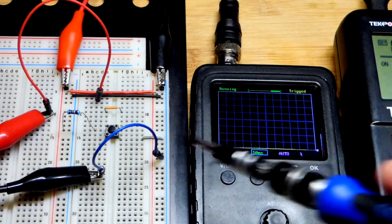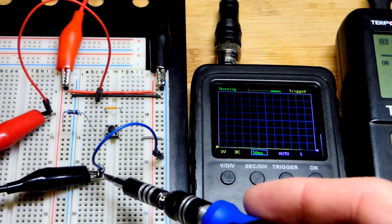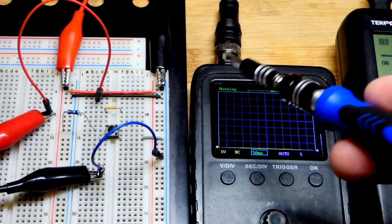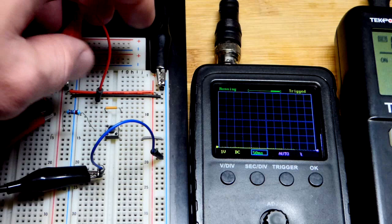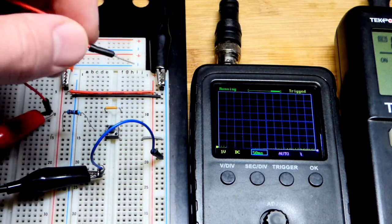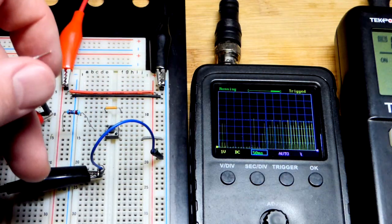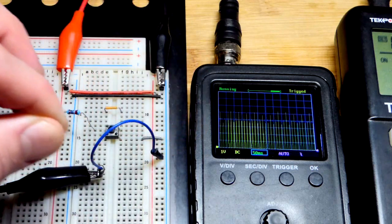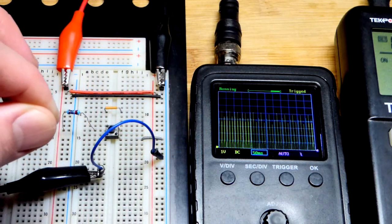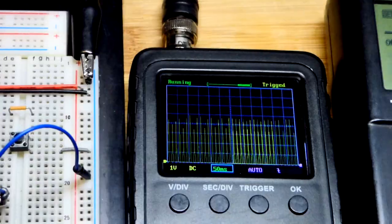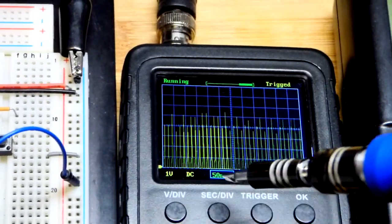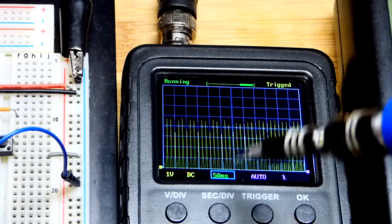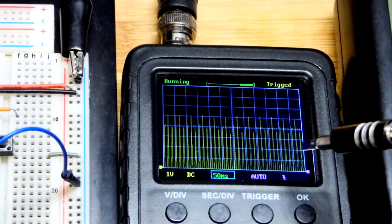So here we are on the board. These alligator clips clip to jumpers, they come from the oscilloscope. So the black one is to ground, our voltage will be in relationship to ground, and you can already see some noise. But when I touch the probe there, then you can see we actually hit up to 5 volts, and each one of these squares is 50 milliseconds.